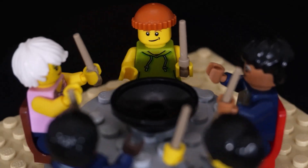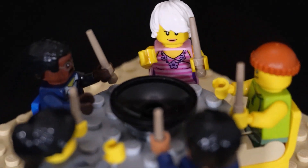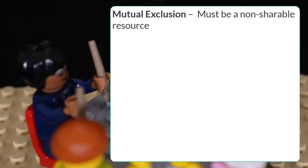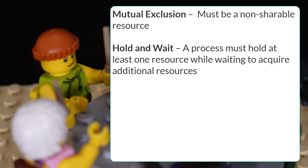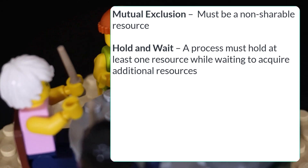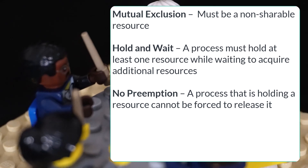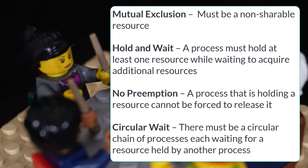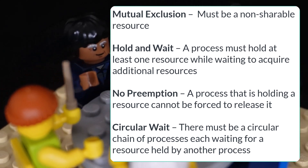This will hopefully help you visualize the four necessary conditions for deadlock to occur. The first is mutual exclusion — meaning that only one process can use the resource at a time. The second is hold and wait — the process must have acquired one resource and be waiting to grab the next. Third is no preemption — a process can't force another process to release a resource. And then circular wait — there must be a circular chain of more than one process, as illustrated with the dining philosophers.